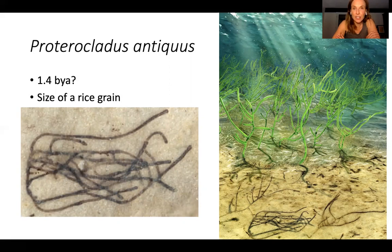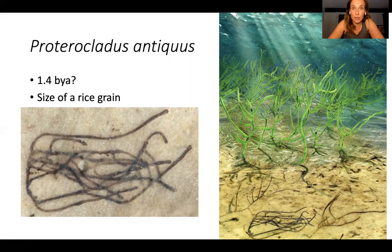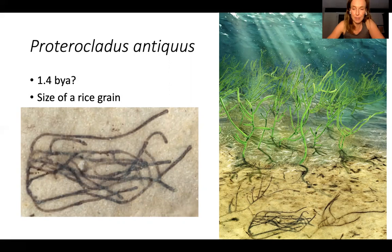There's even more recent evidence showing that these early photosynthetic eukaryotes are older. There's a fossil dated to 1.4 billion years old — tiny, the size of a grain of rice. We'll talk about this more on one of the Fridays, because this was a Canadian group who made this discovery and wrote a really good paper about it.